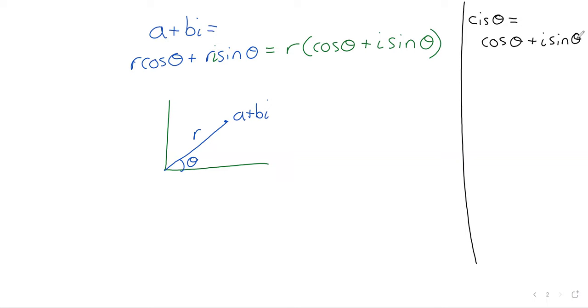I'm probably just going to keep writing out cosine I, I S sine is the reason that C I S is used.